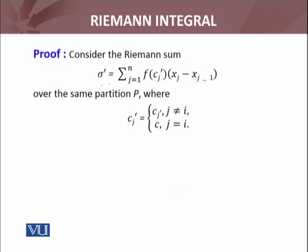Now consider the Riemann sum sigma prime defined this way. This Riemann sum is defined intelligently. These c'_j values: if the j index is not equal to i, then this is c_j. Otherwise, if j equals i, then this is c exactly. In other words, this Riemann sum differs from the previous Riemann sum sigma only at the c_i point when i equals j, otherwise all are equal.